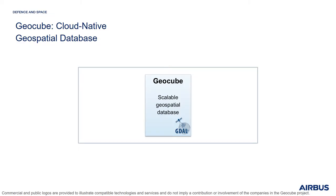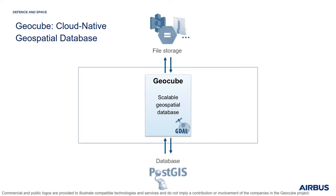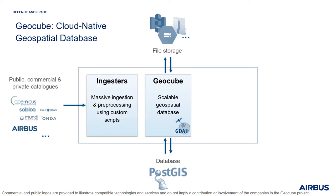The core of the GeoCube is a scalable service using GDAL as an image processing library, a PostGIS database to index images that are stored in an object storage such as GCS, AWS, or a local file system. In the ecosystem of the GeoCube, the ingestors are responsible for the massive ingestion of images from any public, commercial, or private catalogues. The ingestors are capable of processing images using predefined or custom scripts and indexing them in the GeoCube.